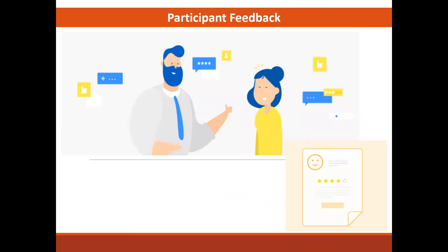The managed participant feedback task enables individuals other than the line manager and worker to provide direct feedback into the worker's performance document. Additional roles providing feedback might include peers, mentors, customers, and other managers such as a matrix manager. These additional roles providing feedback are called participants.